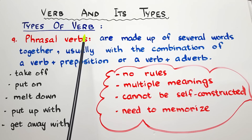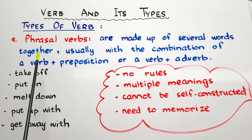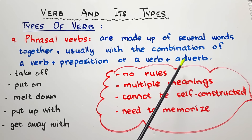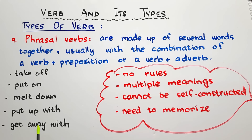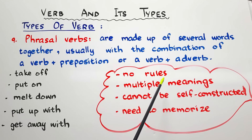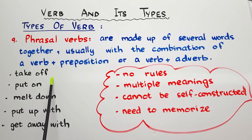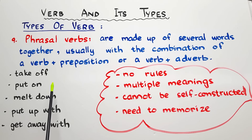The ninth type is phrasal verbs. Phrasal verbs are made up of several words together, usually a verb plus a preposition or a verb plus an adverb. For example: 'take off,' 'put on,' 'melt down,' 'put up with,' 'get away with.' This is difficult for non-native English speakers because phrasal verbs have no fixed rules, they have multiple meanings, and we need to memorize them. For example, 'take off' can mean removing shoes and also a plane taking off.